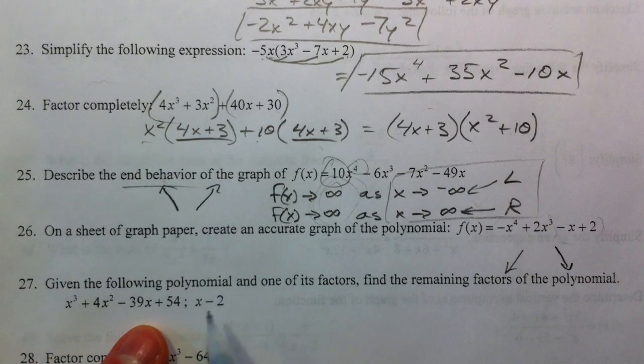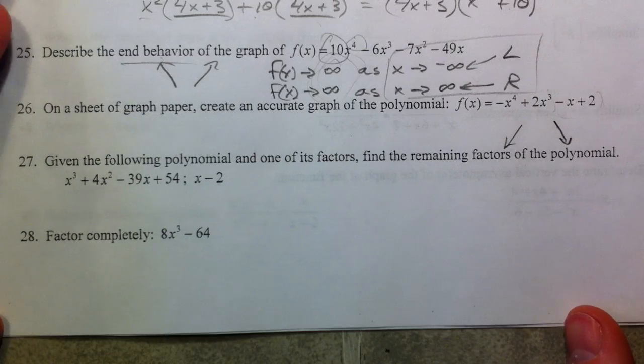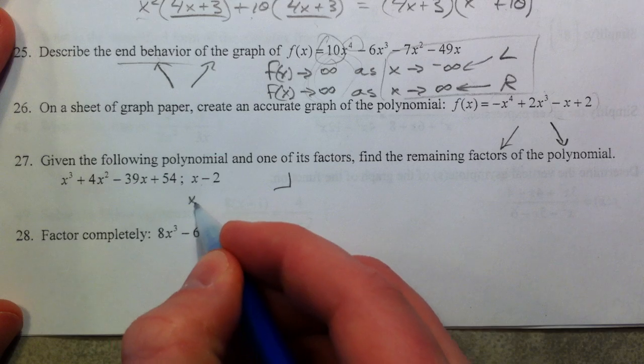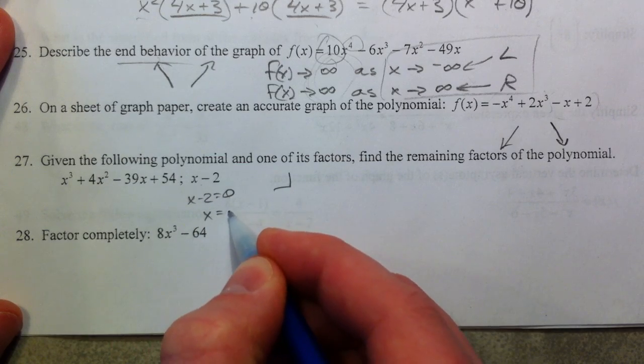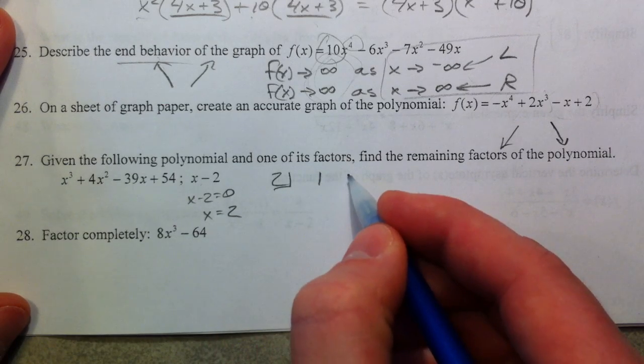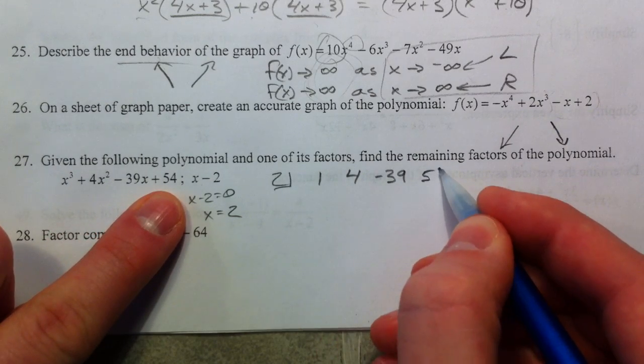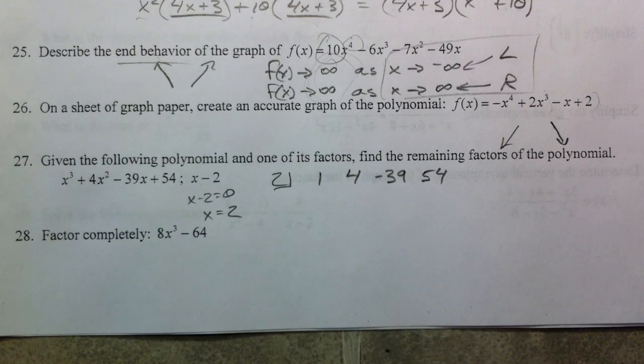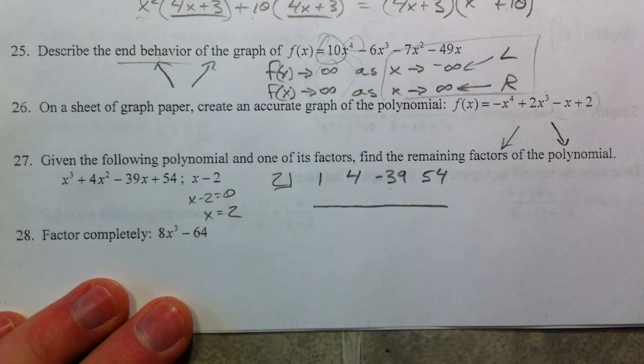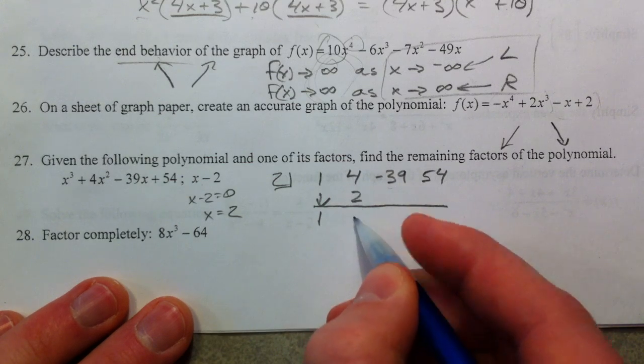So 27. Given this, find the rest of the factors of the polynomial. What we're doing, what we're talking about is our synthetic division that we did. If x minus 2 was equal to 0, x equals 2 is what goes here. And we just take the coefficients, 1, 4, negative 39, positive 54. Remember that if you're missing any of those terms, if you're missing the x term, you'd have to include a 0 over here. So we drop down the 1. 1 times 2 is 2. We add, we get 6.